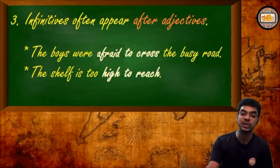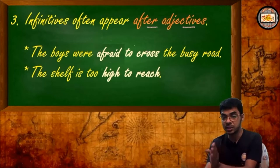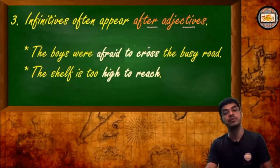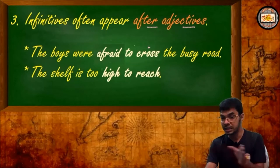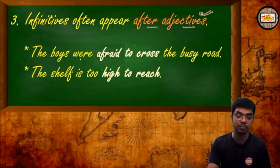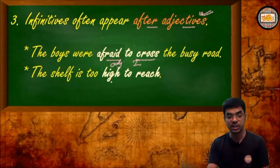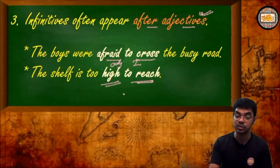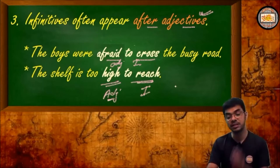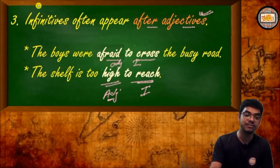The third rule says infinitives often appear after adjectives. This time it is not related to a verb. The infinitive is used in connection with an adjective. Example: 'The boys were afraid to cross the busy road.' Here 'to cross' comes after 'afraid,' which is an adjective. Next sentence: 'The shelf is too high to reach.' Here 'too high' is the adjective and 'to reach' is the infinitive. So an infinitive may appear after adjectives in a sentence.